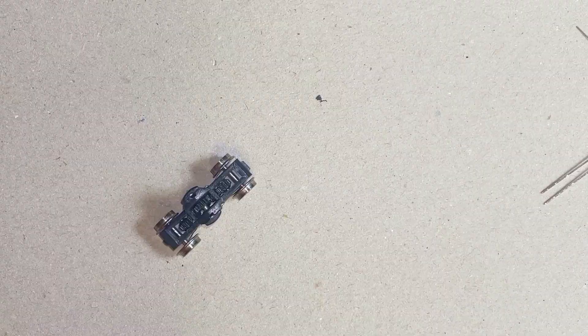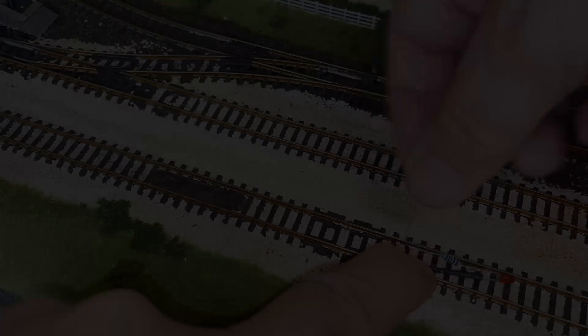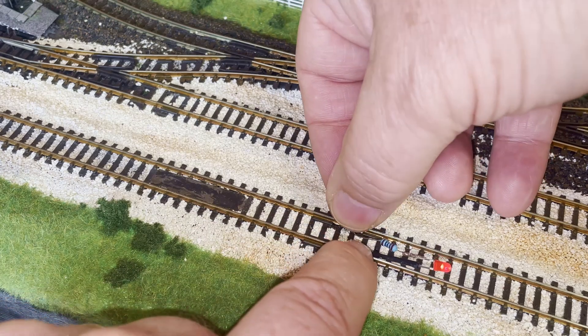But before we get into building the track tester, let's have a look at how it works. All you need is an LED of any color of your choosing and a 1k ohm resistor. That's it. As we know, DCC is a form of alternating current, and that works fine for an LED.